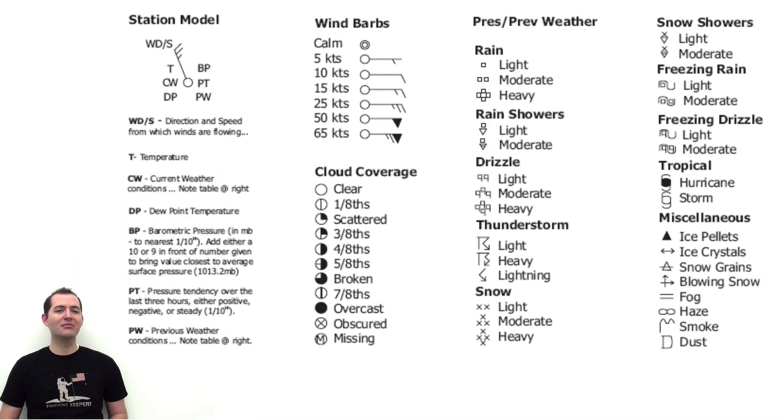Again, there are many other symbols and parameters of weather that can be added to the station model, and they can go from very simple to very complex. It's important when looking at station models to understand the basics of the model, but a key can be very helpful in determining the current weather represented by a complex station model.